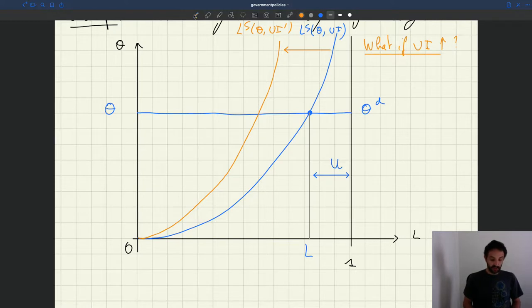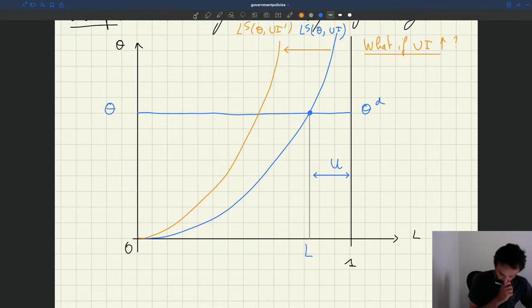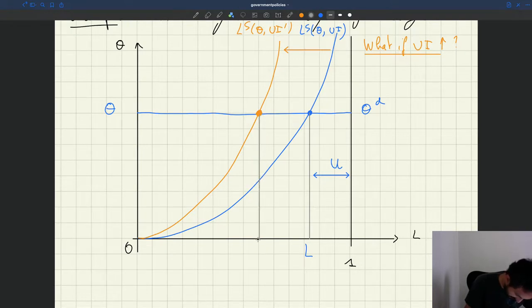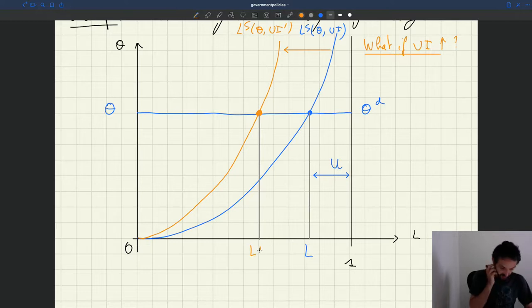So what happens here? Well, in fact, in equilibrium here, the tightness is not going to change because the labor demand doesn't change. So the new equilibrium is going to be here, the same tightness level. New employment is going to be here. So that's basically what happens. So here we have no change in tightness. We have a reduction in employment.